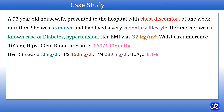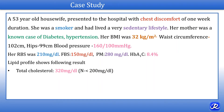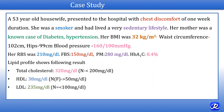Her random blood sugar was increased at 210 mg per deciliter, fasting blood sugar 150 mg per deciliter, and postprandial was 280 mg per deciliter. HbA1c 8.4%, so she had hyperglycemia and diabetes mellitus. Lipid profile shows: total cholesterol 320 mg per deciliter — hypercholesterolemia. HDL cholesterol 38 mg per deciliter, which is decreased as in females it should be more than 50 mg per deciliter. LDL cholesterol 235 mg per deciliter, which is increased — normal should be less than 100. Triglyceride levels 241 mg per deciliter, meaning she has hypertriglyceridemia.